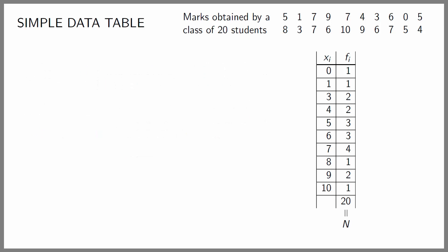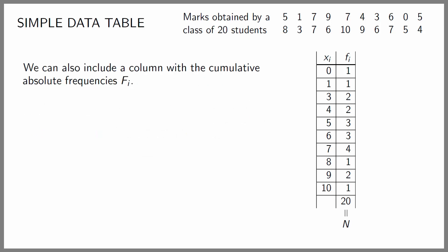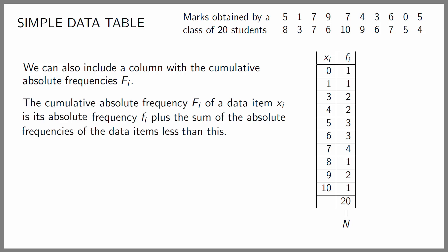In addition to these two columns we can also add two others. We can include a column with the accumulated absolute frequencies, capital F sub i. The cumulative absolute frequency capital F sub i of a data set X sub i is its absolute frequency F sub i plus the sum of the absolute frequencies of the data sets less than it. The accumulated absolute frequency of data 0 is just its absolute frequency, which is 1, since there are no data below it.